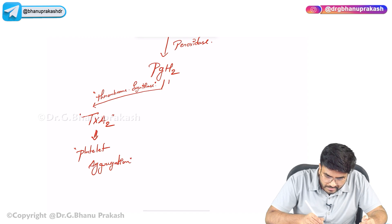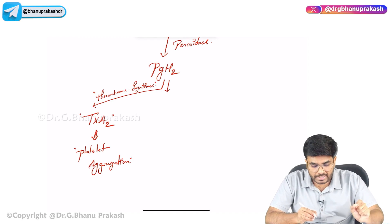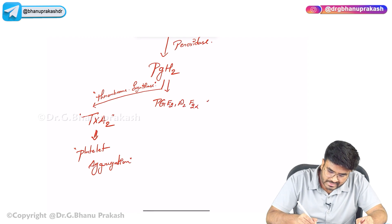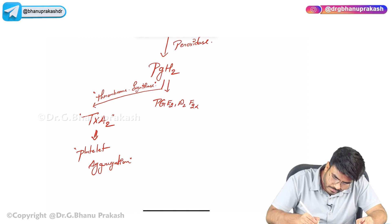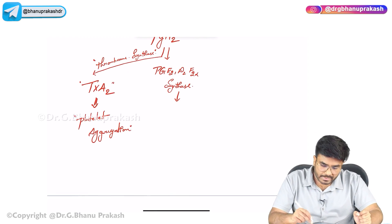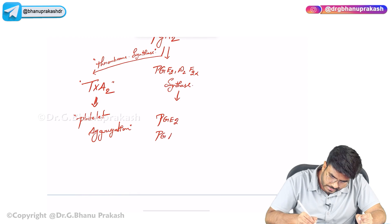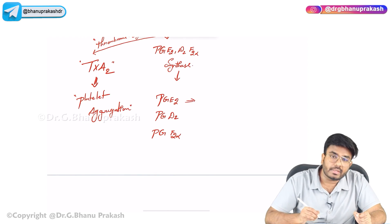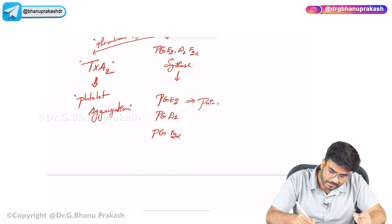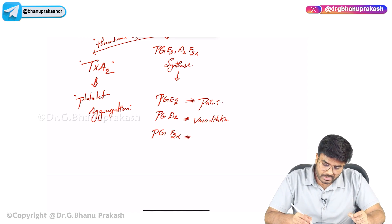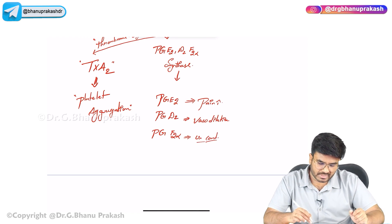Next, prostaglandin H2, when acted upon by prostaglandin E2/D2/F2 alpha synthase, produces prostaglandin E2, prostaglandin D2, and prostaglandin F2 alpha. Prostaglandin E2 is the one which causes and increases pain. Prostaglandin D2 causes vasodilation. Prostaglandin F2 alpha, also called carboprost, causes uterine contractions.